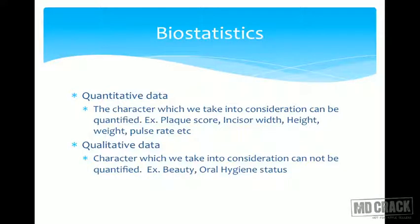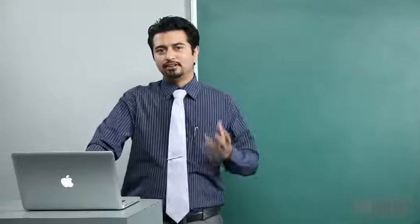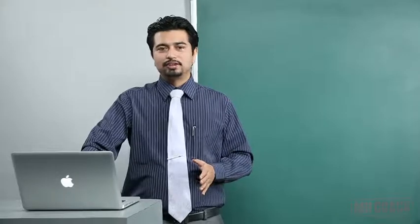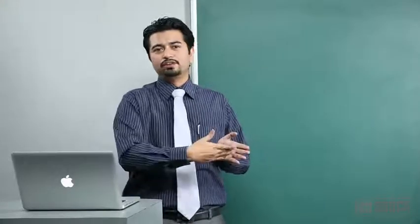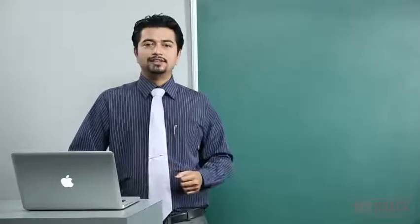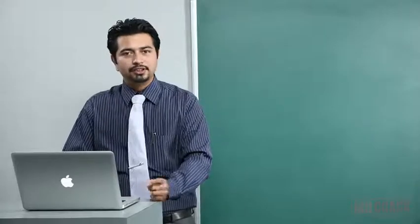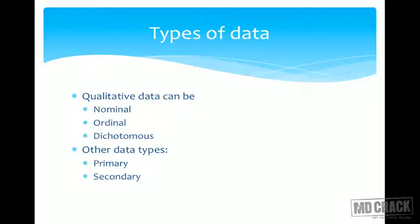There are basically two types of data: quantitative data and qualitative data. Quantitative data is measurable — temperature, height, weight — you are given a quantity. Qualitative data relates to quality, which cannot be directly measured. For example, beauty cannot be put on a scale of one to ten in an acceptable way. Data that cannot be directly measured is called qualitative data; another example is oral hygiene.